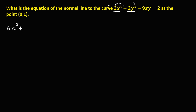Then plus the derivative of 2y to the power 3: multiply 3 times 2, which is 6y squared, times the derivative of y, that's y prime. Then minus, we bring down the numerical coefficient, times the derivative of xy using the product rule: that's x times y prime plus y. Then equals the derivative of a constant, which is 0.